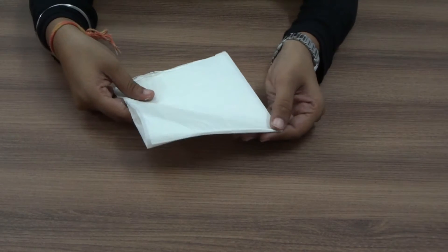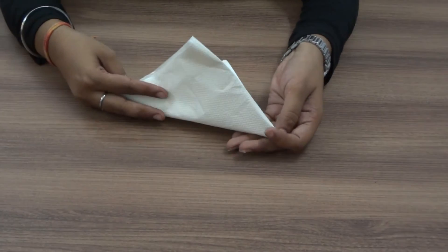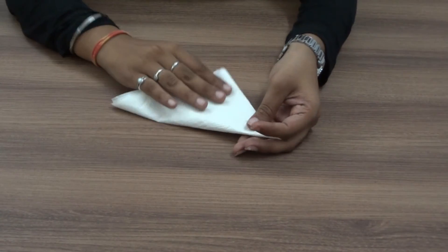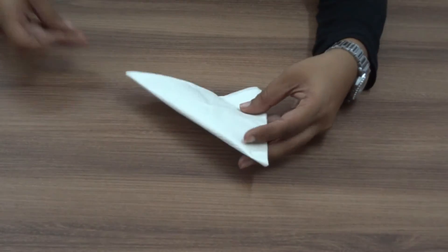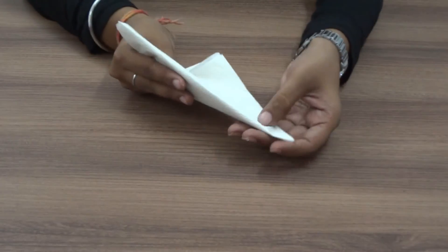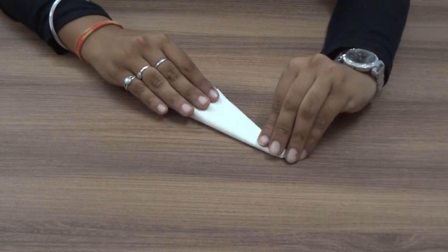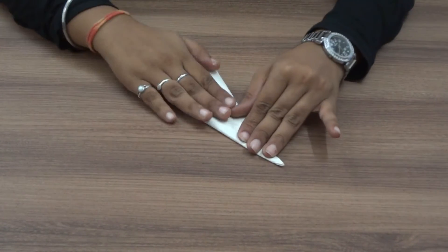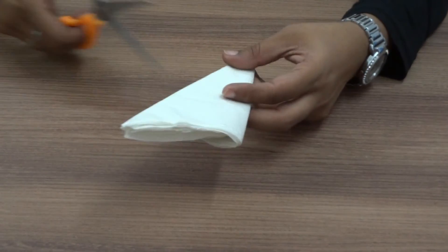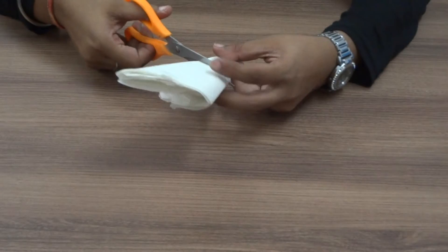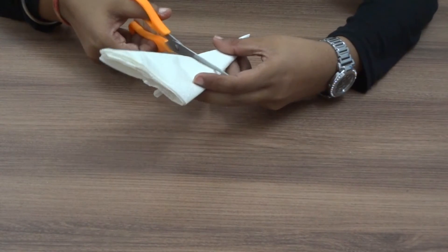Then fold it again and fold it again. After folding, we will fold it over and keep folding the same way. Then we cut the edge so it will come this way.